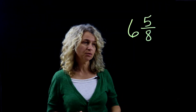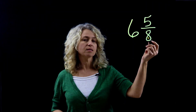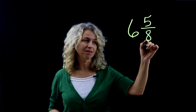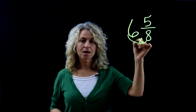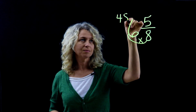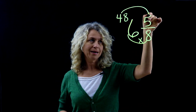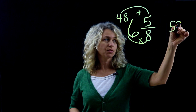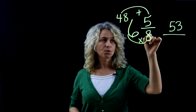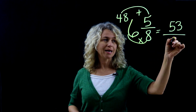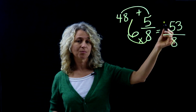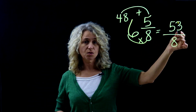Let's look at one last example with a little bit larger numbers, but you'll still use the same method. 8 times 6 is 48, and then add the numerator — 48 plus 5 is 53. Remember, your denominator stays the same. So 6 and 5 eighths becomes the improper fraction 53 eighths.